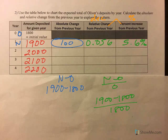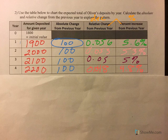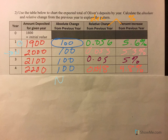Go ahead and hit pause, try to fill out the rest of the table, then come back and check your work. Just a quick refresher: if we're finding a given year, that year is 'new' and we go back one year to find 'old.' So it's always the year before. New minus old gives absolute change, and new minus old divided by old gives relative change.